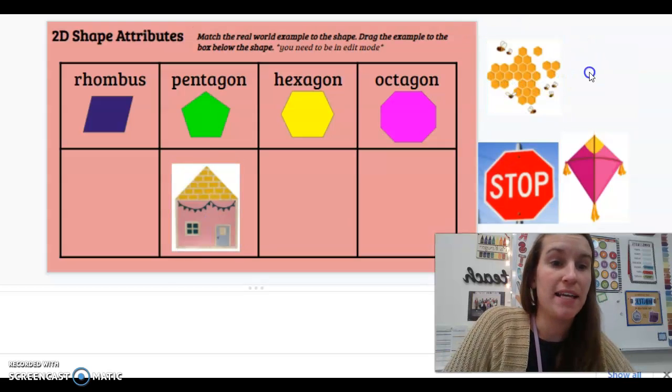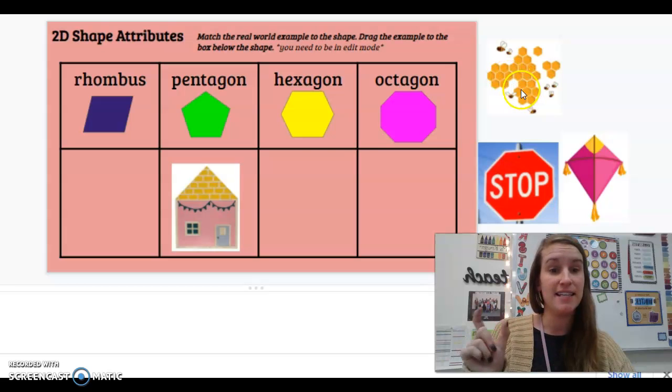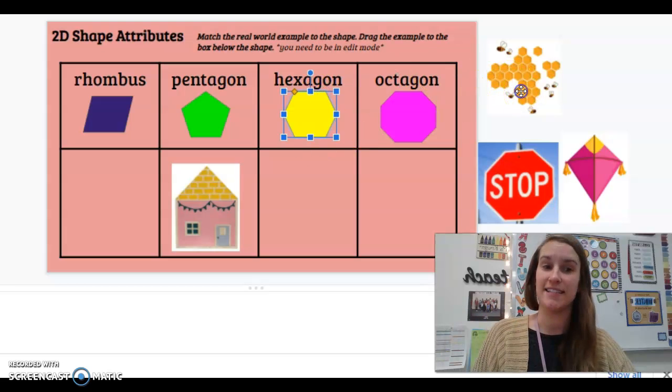Okay. Well now with my honeycombs, with my bees, they have one, two, three, four, five, six sides. Six, hex. It's a hexagon.